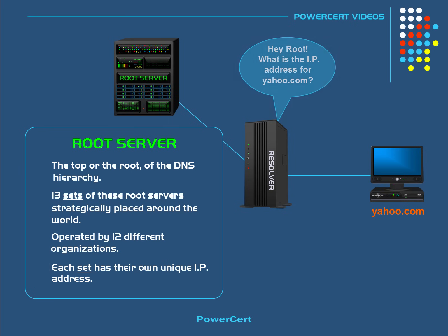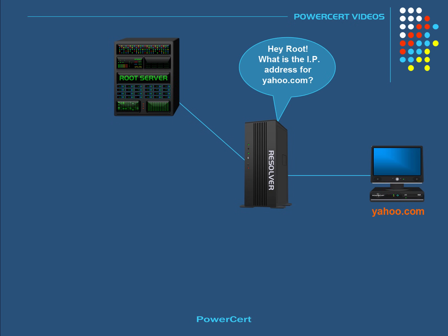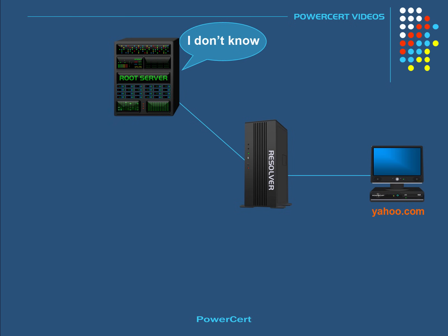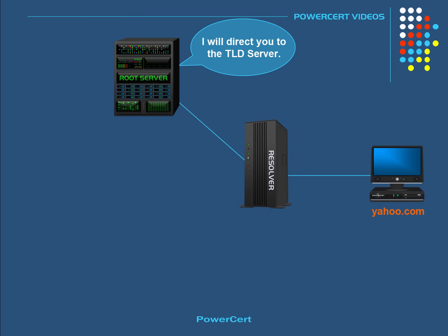So when the root server receives the query for the IP address for yahoo.com, the root server is not going to know what the IP address is. But the root server does know where to send the resolver to help it find the IP address. So the root server will direct the resolver to the TLD or top level domain server for the .com domain.